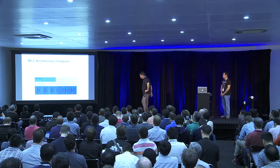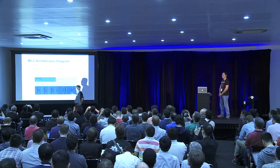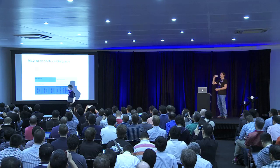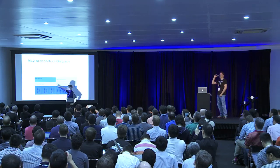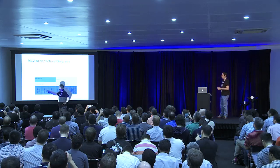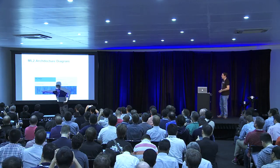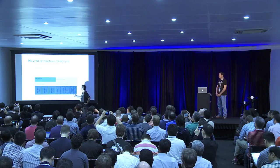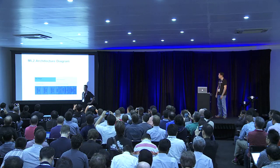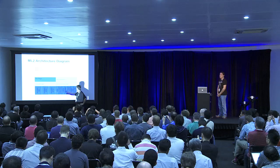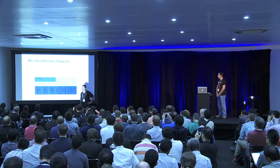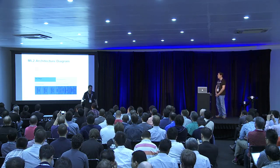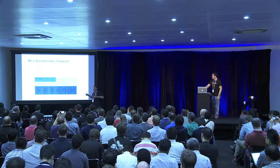This diagram shows the Neutron server running the ML2 plug-in. The ML2 plug-in itself is made up of a type manager and a mechanism manager. In the Havana release, type drivers include GRE, VLAN, and VXLAN among others. The mechanism manager manages a set of mechanism drivers: OpenVSwitch, LinuxBridge, and Hyper-V communicate with the Layer 2 agents; Arista, Cisco Networks, TLF, and Network Control System are drivers that configure top-of-rack switches and trunk VLANs through the core network; and L2 population is also included.